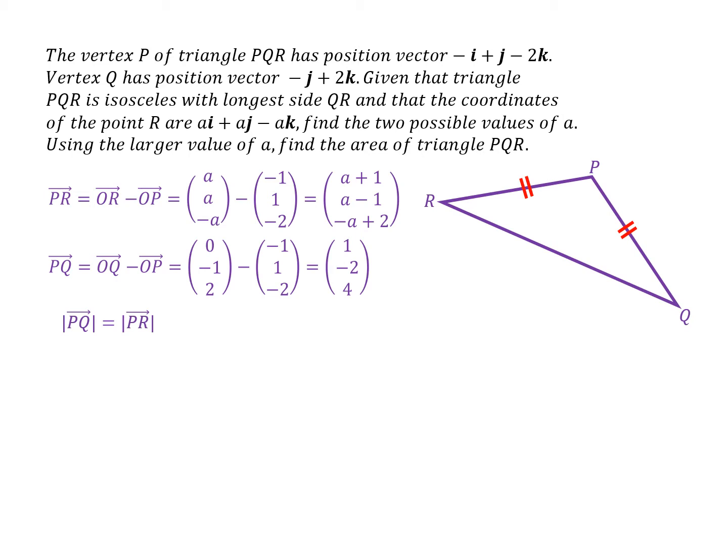The length of PQ is one squared plus minus two squared plus four squared square rooted. And the length of PR is that squared plus that squared plus square rooted. So there we are. Those two things are equal to each other.